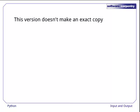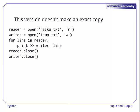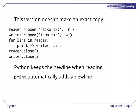This version looks similar to the previous one, but it doesn't make an exact copy of the original file. Instead of using write, it prints to the file. The problem is that Python keeps the newline character at the end of the input line when it's reading, and print automatically adds a newline at the end of what it outputs. So this program actually produces a double-spaced copy of the file.